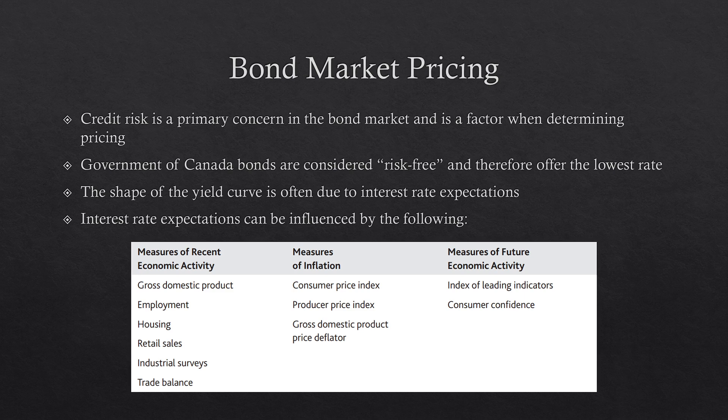When interest rates are expected to increase, you would have the longer-term bonds offering higher rates, because investors want you to lock into longer-term bonds with the current rate before rates rise. Conversely, if interest rates are expected to decrease, the shorter-term bonds will have higher rates because in a few years when it comes to renew, they're expecting you would have to renew at a lower rate.